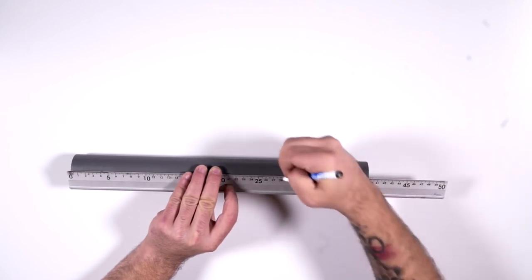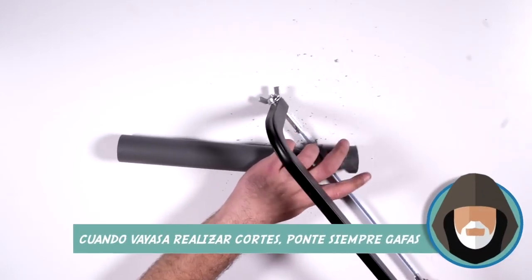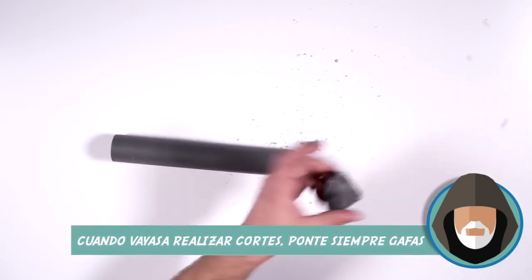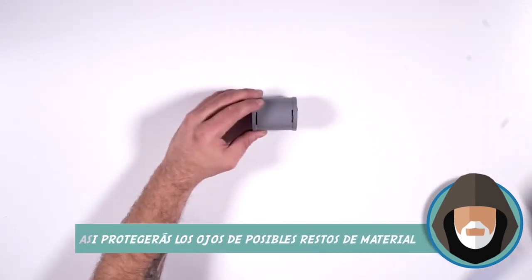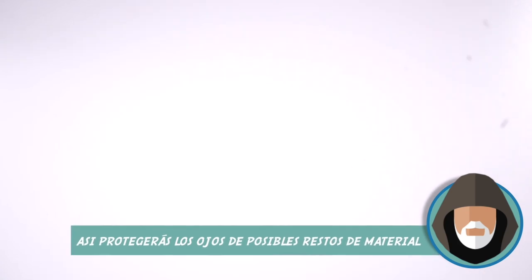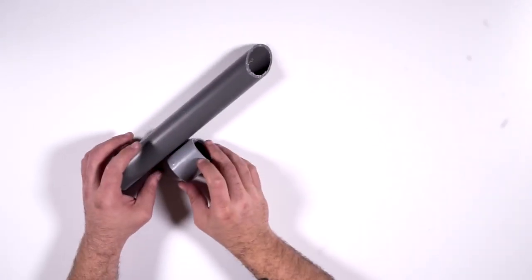We start by marking and cutting some PVC pipes with a hand saw. The important thing is to make the cuts as straight as possible. With a drill, make some holes in the main pipe and another hole in the smaller pipe.